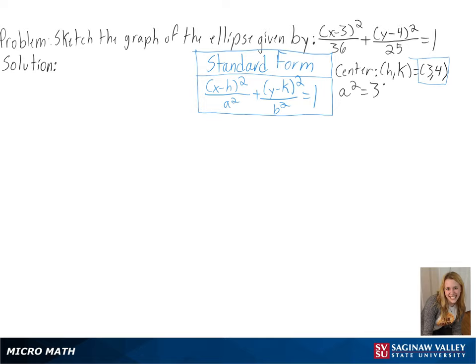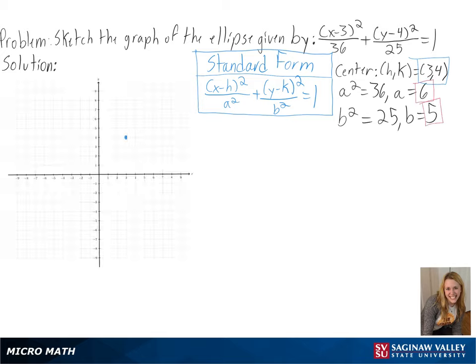Next, we need to figure out a and b since they will determine our vertices. For a, we get 6, so we will be going left and right 6 units. And for b, we get 5, so we will be going up and down 5 units.